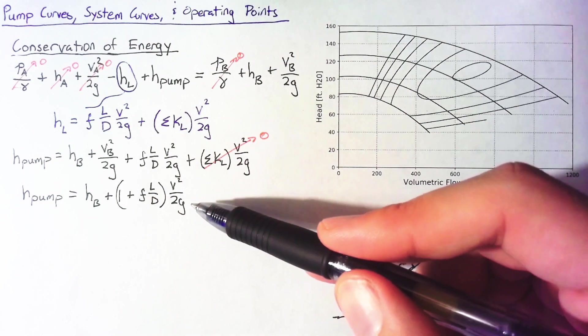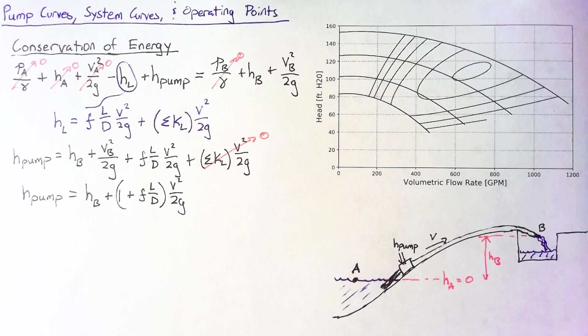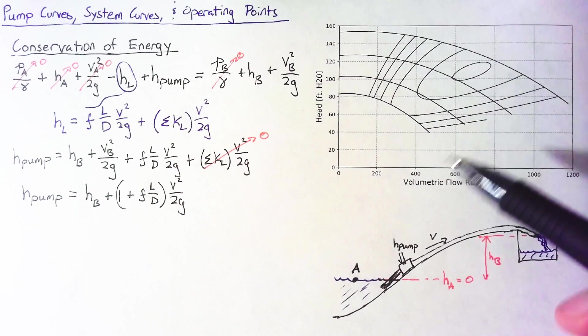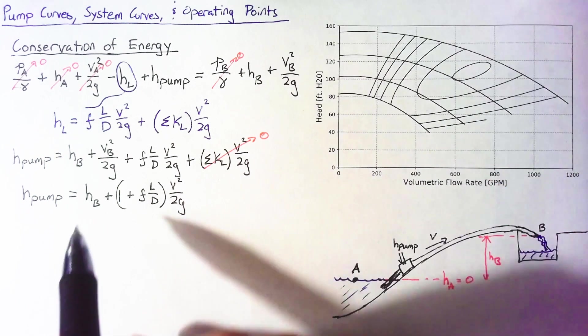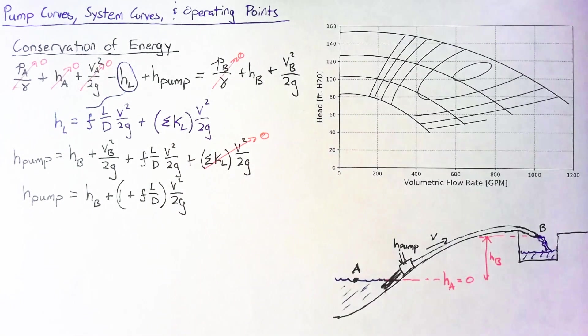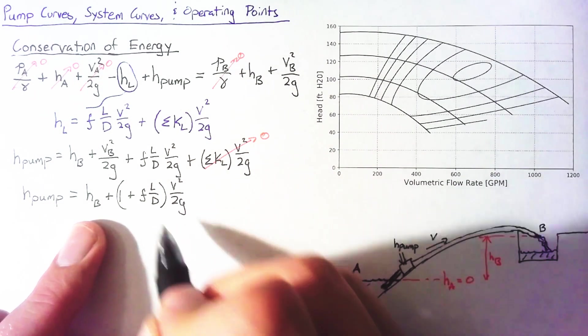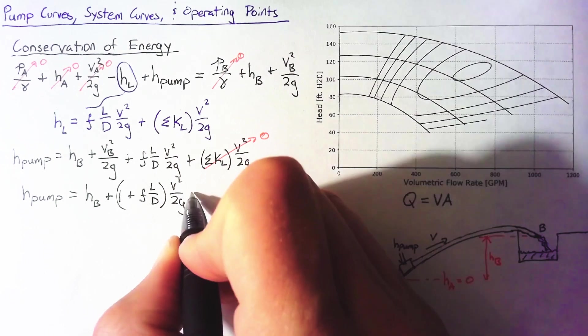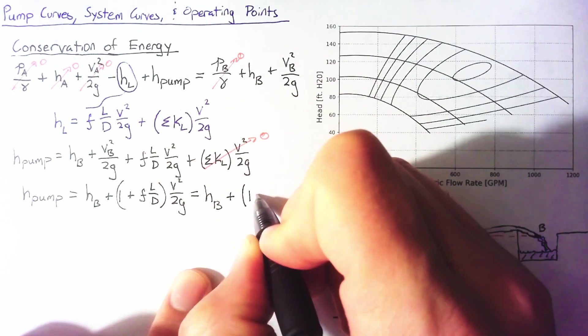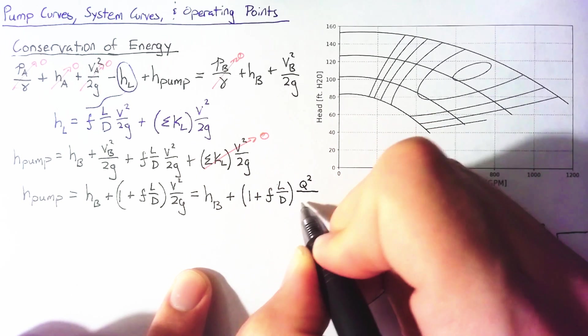So our equation says that the head required by the pump is going to be composed of two parts. We have this height that we're trying to move up, and then we also have some additional amounts, which is going to be based off of V squared over 2g. So you can just say that this is one plus fL over D multiplied by V squared over 2g. This is as far as we can get without knowing something more about the pump or about the velocity. So what we're going to do next is link up this information with the information from our pump curve. The X axis is talking about volumetric flow rate, so we need to use our definition of Q, which is just velocity multiplied by the cross sectional area of our pipe.